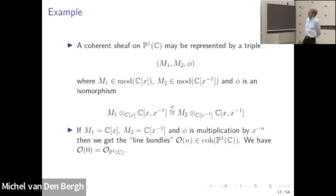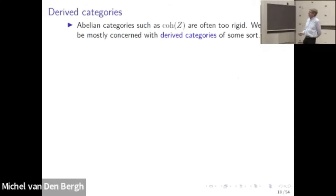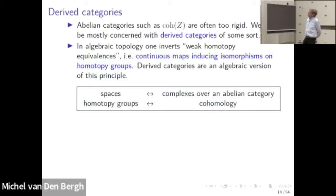If on the affine opens one does nothing but still has some freedom in the gluing, we get the tautological line bundles, which already occurred in Sasha's talk. Abelian categories are often too rigid — an abelian category is a category in which every morphism has a kernel and a cokernel satisfying well-known axioms, just like the category of abelian groups. We will consider derived categories. In algebraic topology, one considers spaces up to homotopy equivalence, and one way to do this is to formally invert weak homotopy equivalences — maps which induce isomorphisms on homotopy groups.